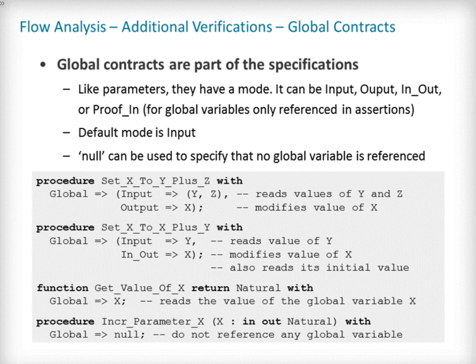Global contracts are provided as part of the sub-program specification, as they provide useful information to any users of the sub-program. The value specified for the global aspect is an aggregate-like list of global variable names grouped together depending on their mode. For example, the procedure set_X_to_Y_plus_Z reads both Y and Z listed as input and updates X listed as output. As set_X_to_X_plus_Y both updates X and reads its initial value, X's mode is in-out. Like for parameters, if no mode is specified, then the default is input — that is the case in the declaration of GETVALUE_X. Finally, if a sub-program like INCR_A_parameter_X does not reference any global variables, the value of the global contract should be set to NULL.